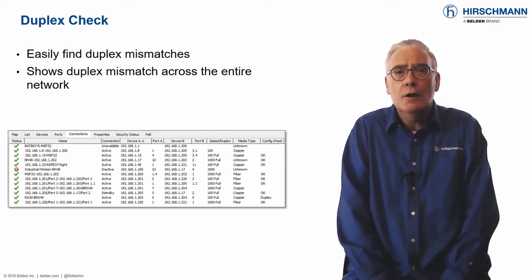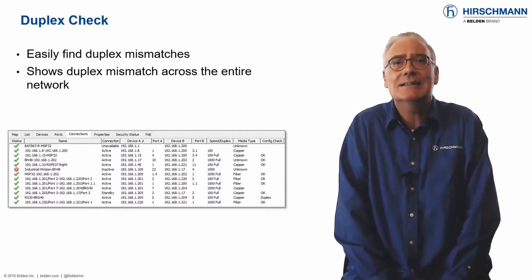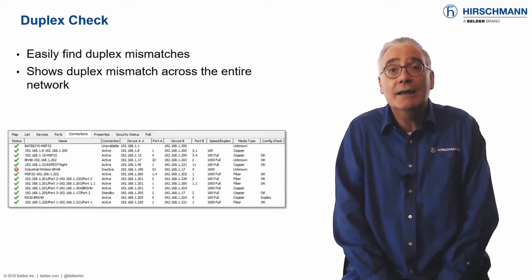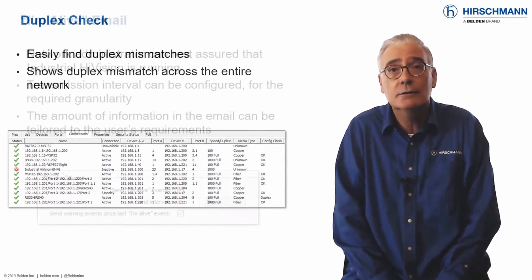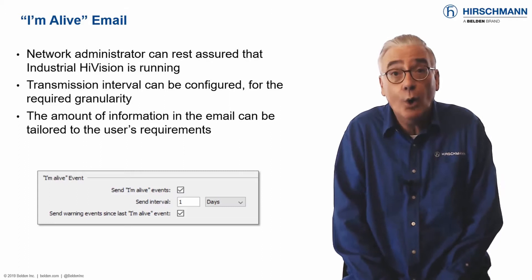Finding duplex mismatches is a painstaking and tedious task prone to errors. The duplex check in Industrial HiVision highlights configuration failures across your network at a glance.